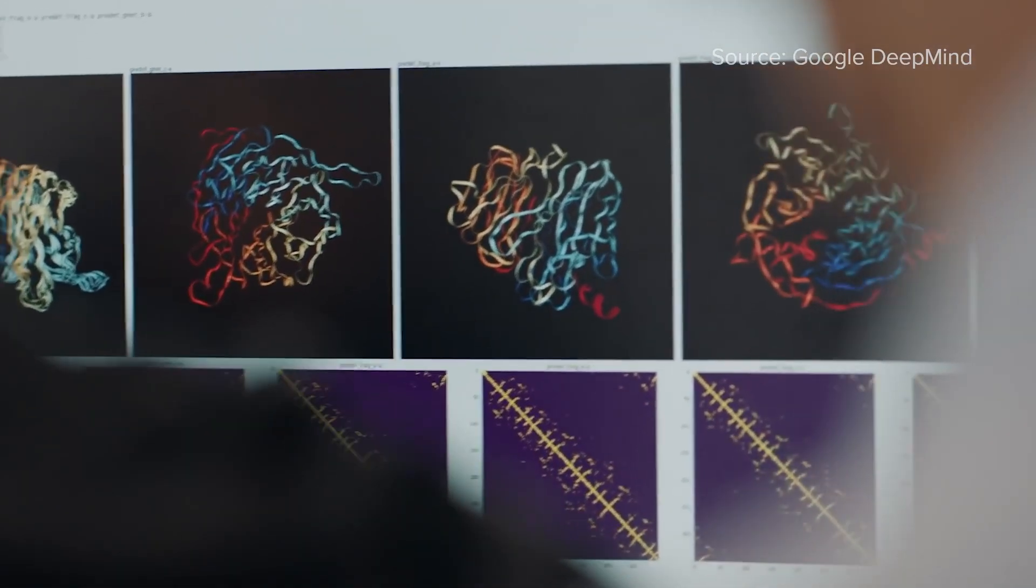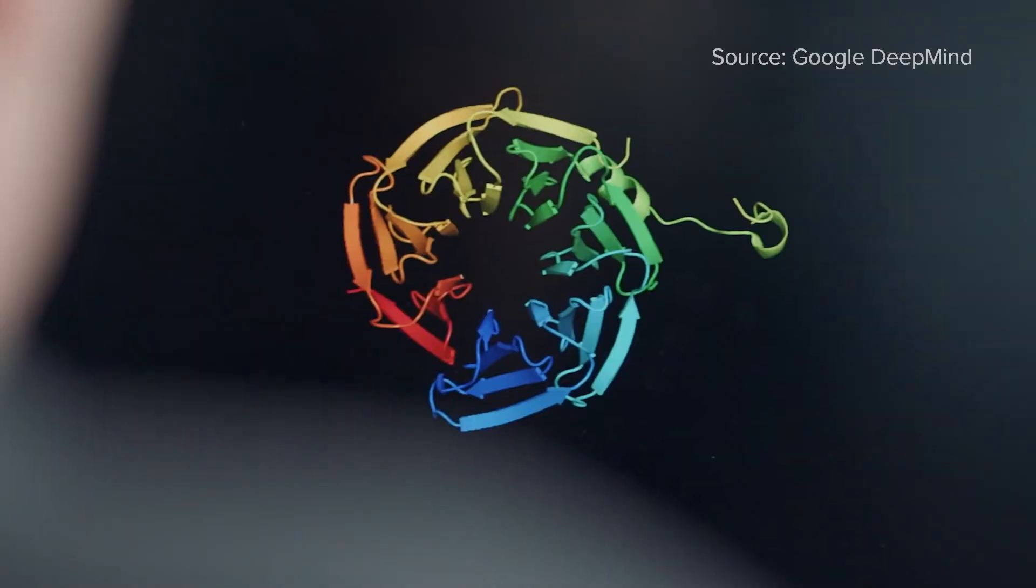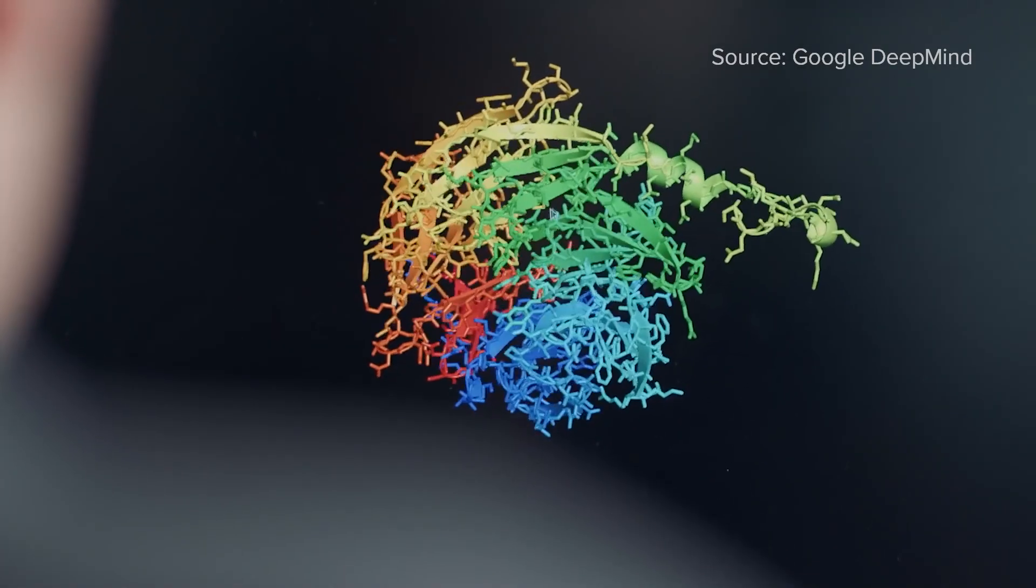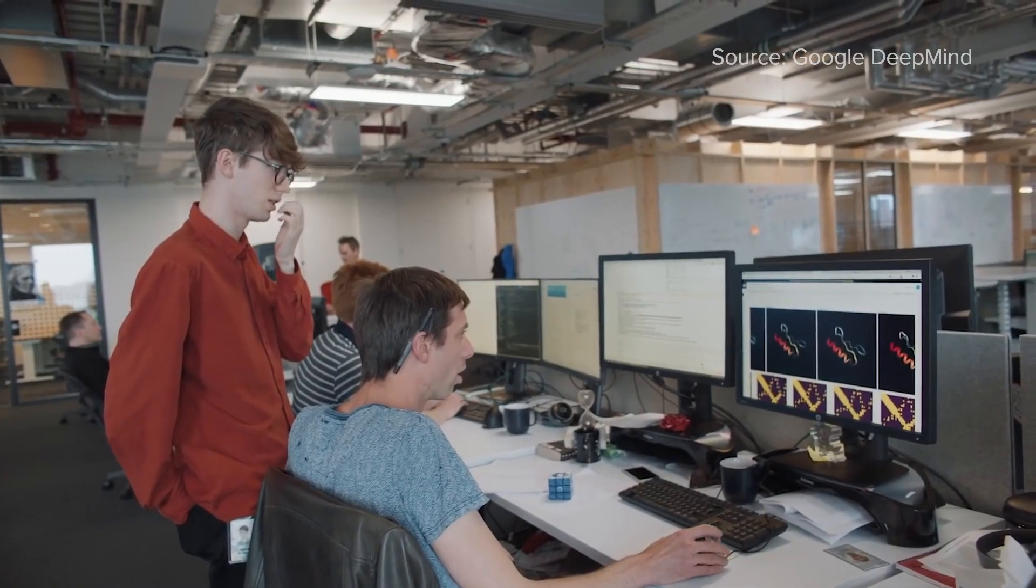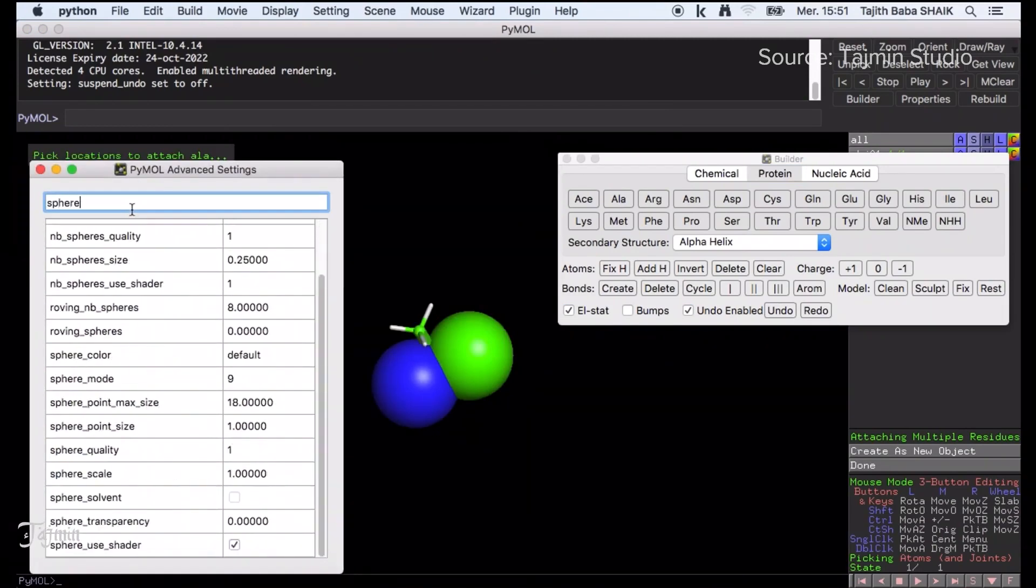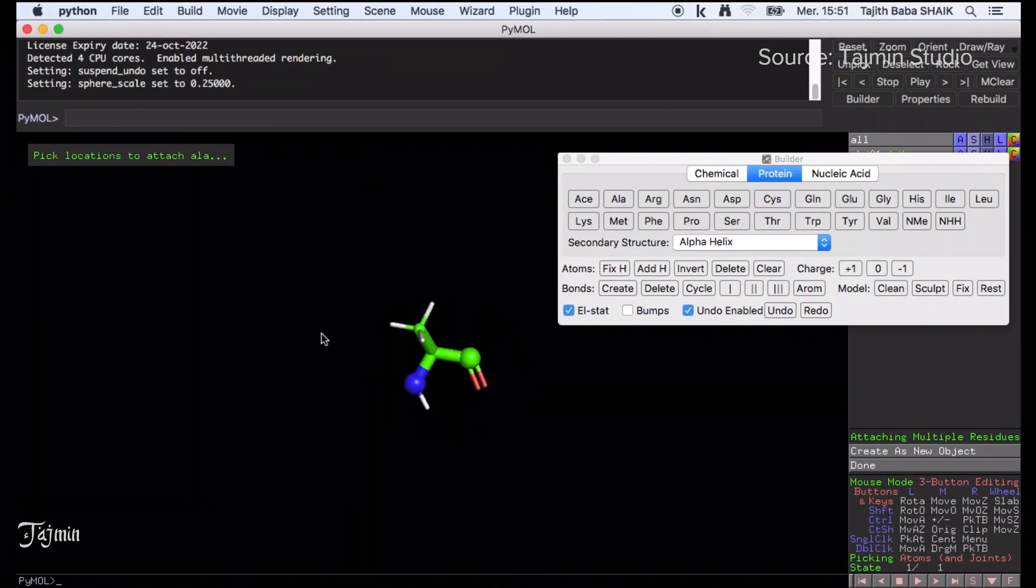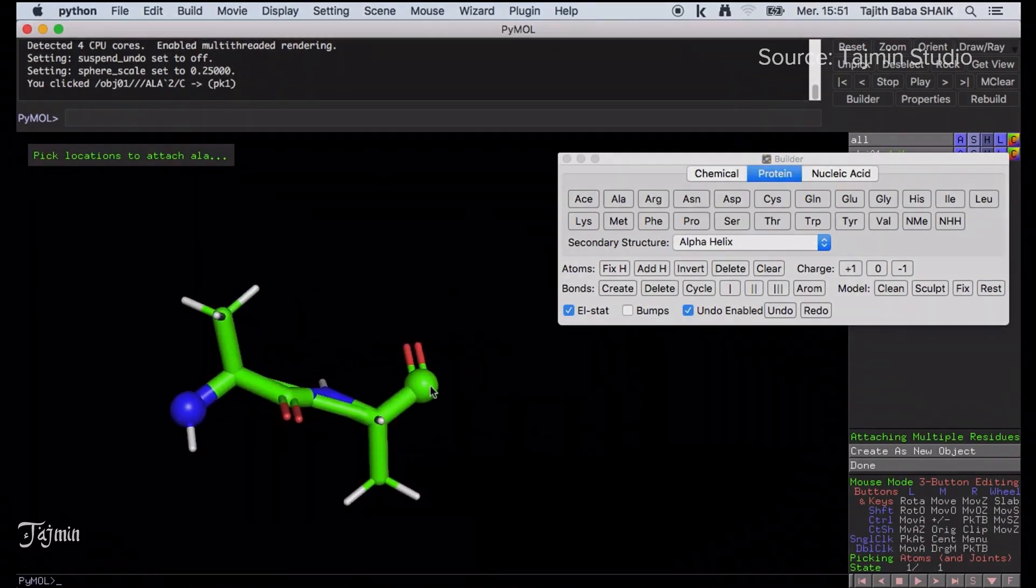However, the irregular shapes of intricately intertwined secondary structures make it difficult to grasp their spatial relations through a 2D screen. In addition, offering the 3D structures of proteins can be cumbersome with 2D input devices such as a mouse.